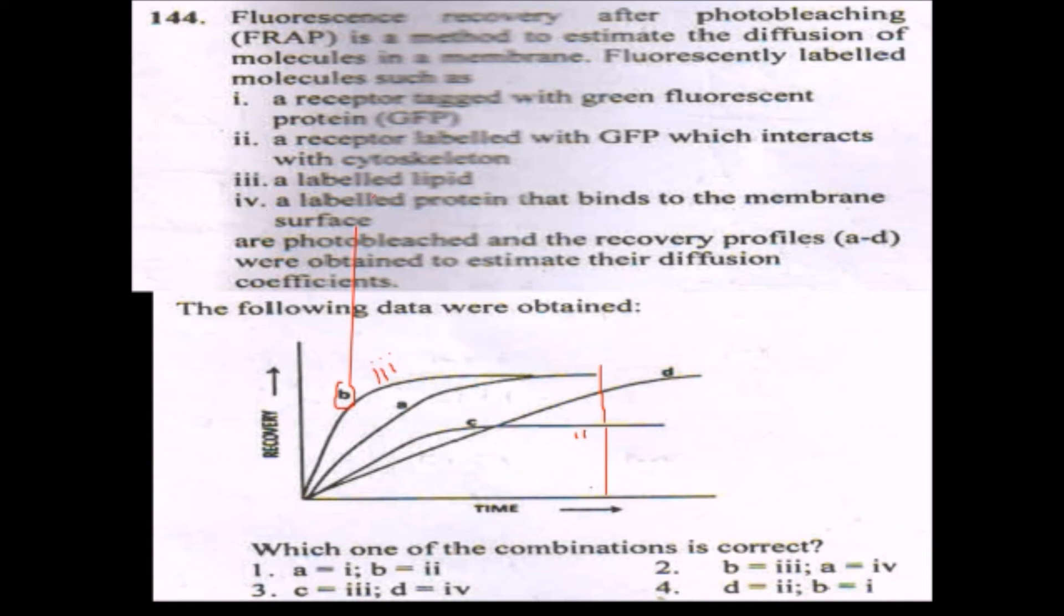Now, if we compare the labeled protein that binds with the membrane surface in comparison with B, lipid molecules which bind protein have increased weight, their mobility will decrease, and the time to recover will increase. So A represents number four, the membrane-bound protein. And finally, D represents the protein which is tagged with GFP.